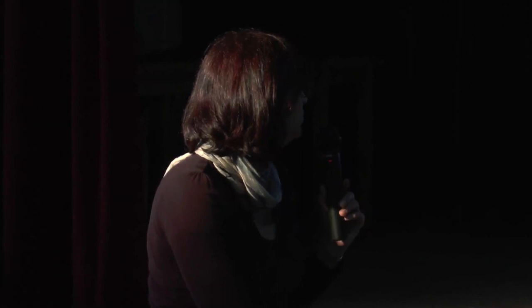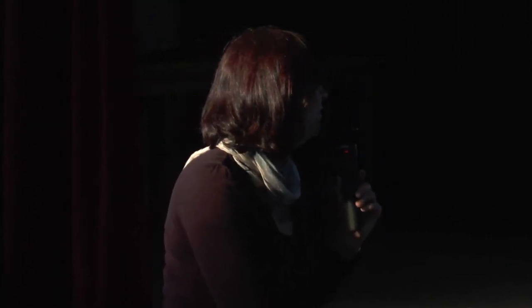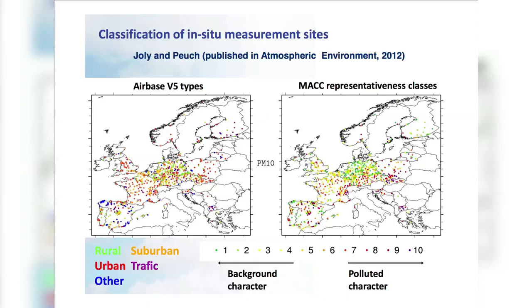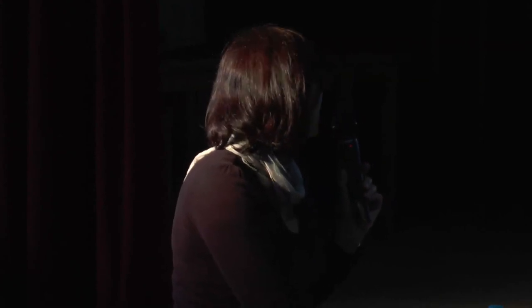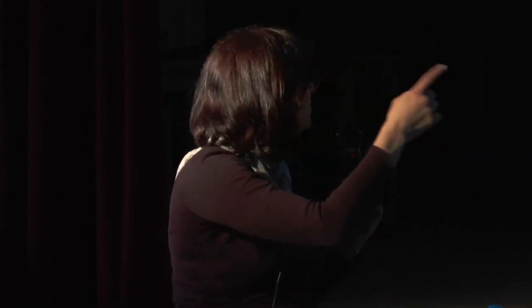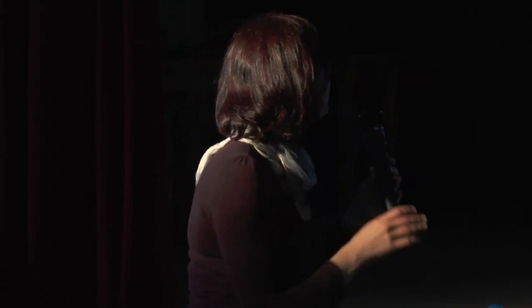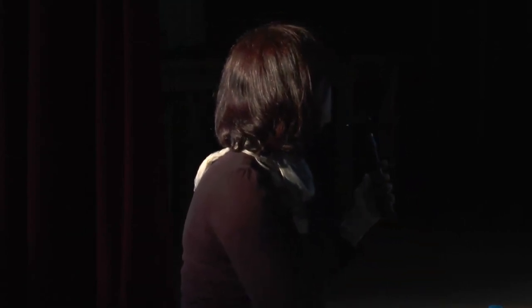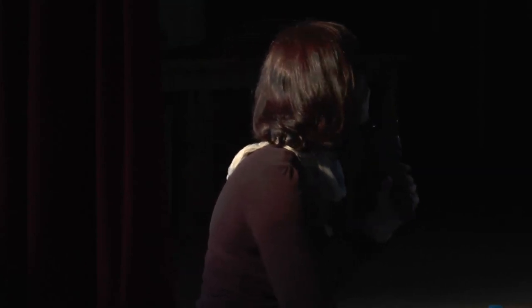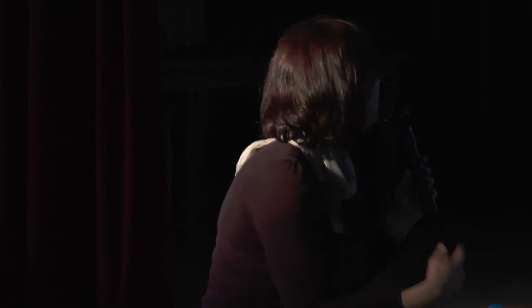The result is a classification from 1 to 10, where 1 corresponds to background rural character and 10 corresponds to urban or traffic character. On the left is the airbase station classification with metadata given by airbase, using a color code from green for rural to violet and purple for traffic. Comparing the two classifications for PM10, the color codes should be similar, but there are quite a lot of differences between the MAC classification and the airbase classification, showing that the metadata is not very reliable.